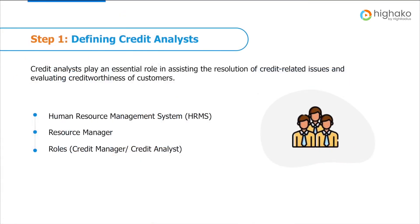The first step of the Oracle credit management process is to define credit analysts. Credit analysts play an important role in assisting the resolution of credit-related issues and evaluate the credit worthiness of your customers. To define credit analysts, first you define them as employees in the Oracle Human Resource Management System. Next, you import employees from HRMS into Resource Manager and assign their respective roles — either a credit analyst or a credit manager. You can assign the credit manager role to a credit analyst, as a credit manager has access to the setup functionality in Oracle Credit Management.